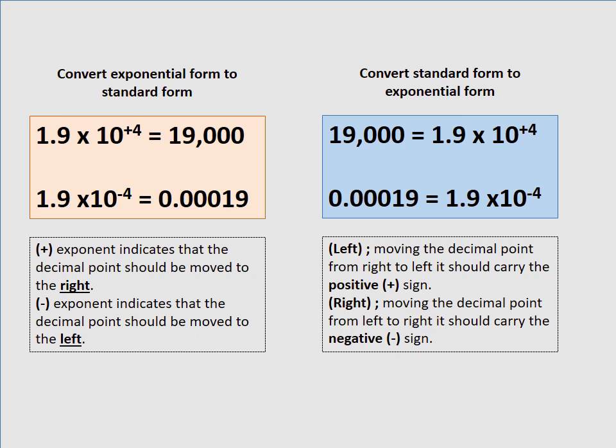Another example: 0.00019 in exponential form is 1.9 times 10 to the negative 4. When you move the decimal point to the right, it carries a negative sign. So for 0.00019, you move the decimal point from left to right, and it carries a negative sign. Please study and understand this.